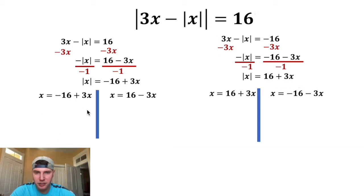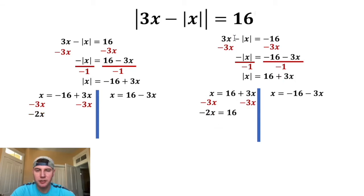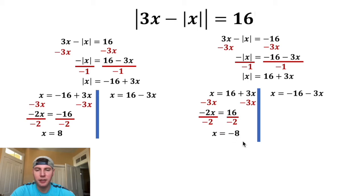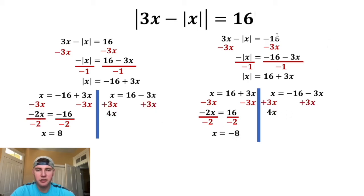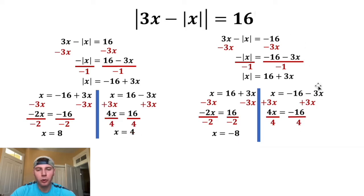For the first two equations, subtract 3x from both sides to get negative 2x equals negative 16 or negative 2x equals 16. Dividing by negative 2 gives x equals 8 and x equals negative 8. For the other two equations, add 3x to both sides to get 4x equals 16 or 4x equals negative 16. Dividing by 4 gives x equals 4 or x equals negative 4.